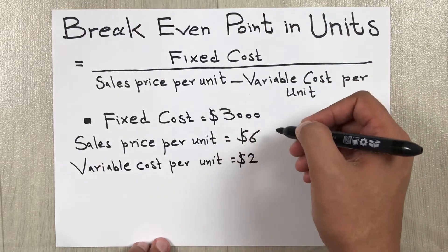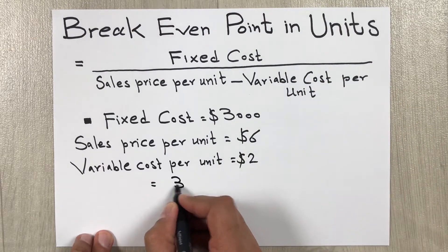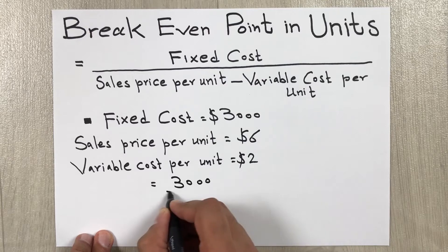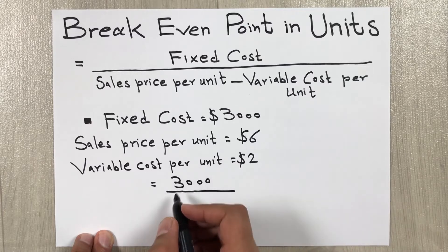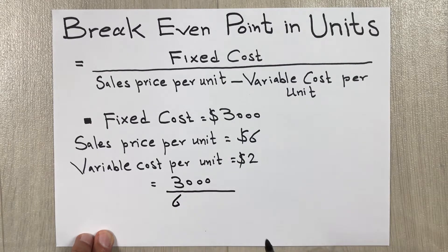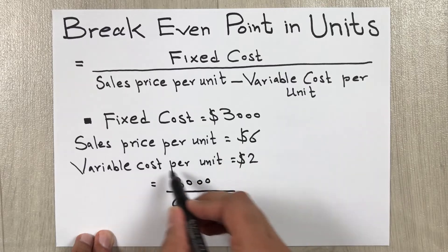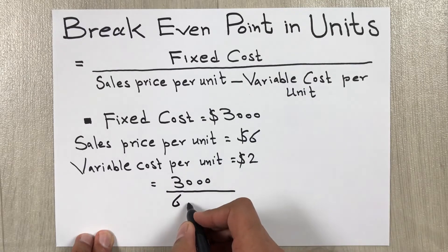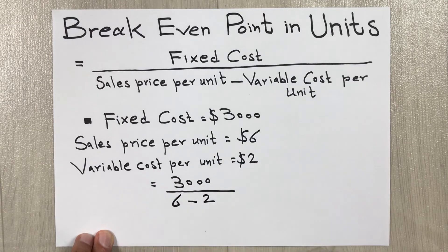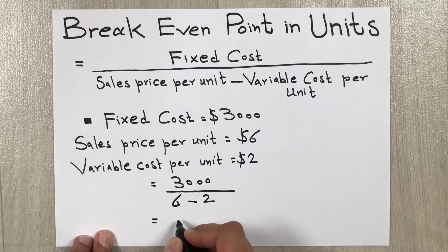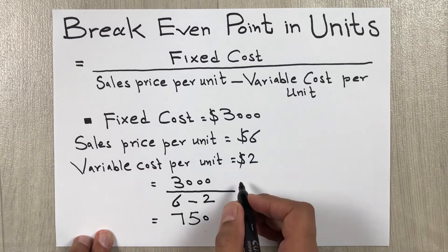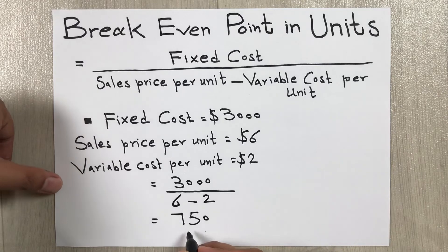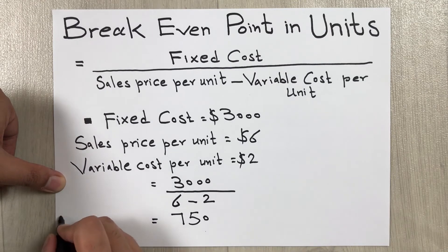Our fixed cost is three thousand, so we put three thousand here, then divide by sales price per unit which is six dollars, minus variable cost per unit which is two dollars. So six minus two gives us four, and three thousand divided by four gives us seven hundred and fifty. This is our break-even point in units.